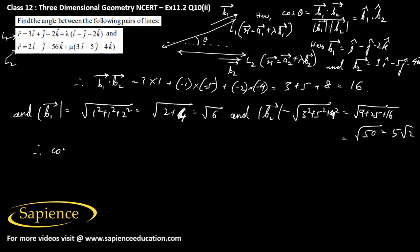Therefore cos of the angle theta between the two straight lines equals B1 dot B2, that is 16, divided by mod of B1, that is root 6, times mod of B2, that is 5 root 2.